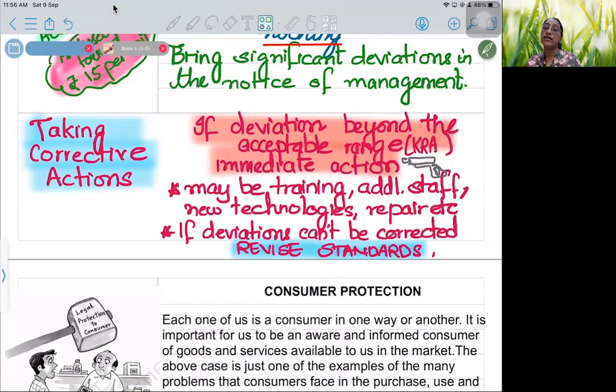And if corrective measures cannot be taken - sometimes it happens which is not in our own control - in that case we can revise the entire standard. Like instead of 100, make it 90, make it 80. If everything is fine, everything, but still it's not coming, that means the standard we set was imaginary. We should correct it.